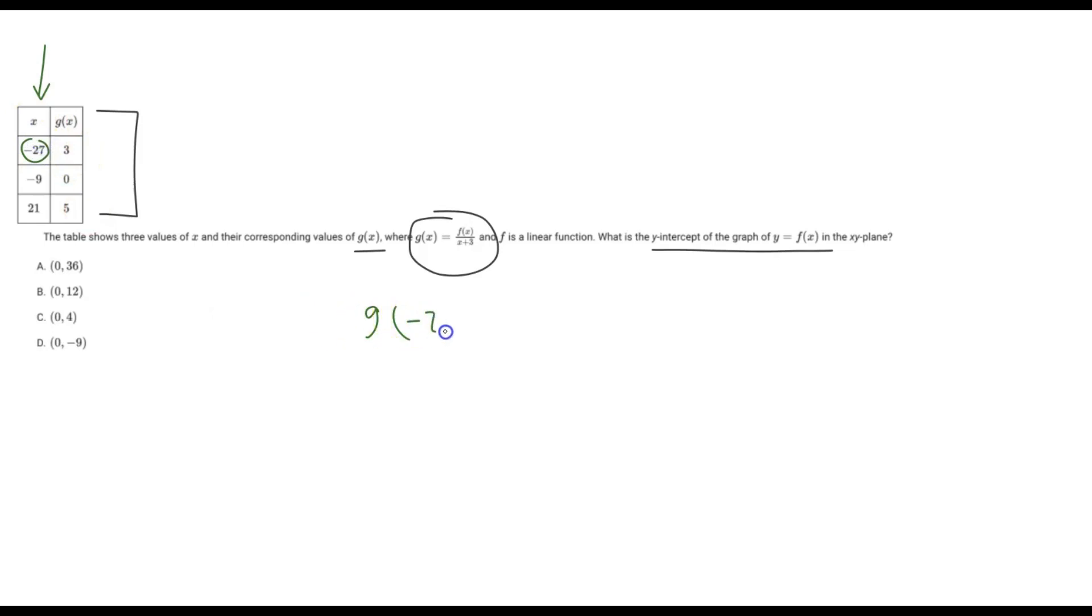So we know g of negative 27, whatever that is, is going to be equal to f of negative 27. And then because it's dependent g of x, then we have x plus 3. So x in our case is going to be negative 27. So you have negative 27 plus 3.